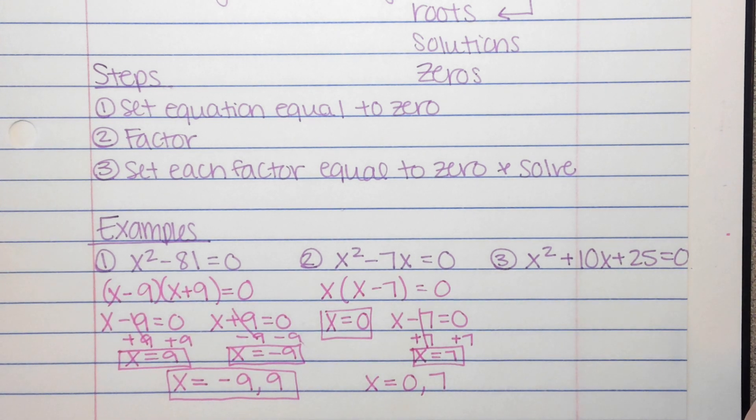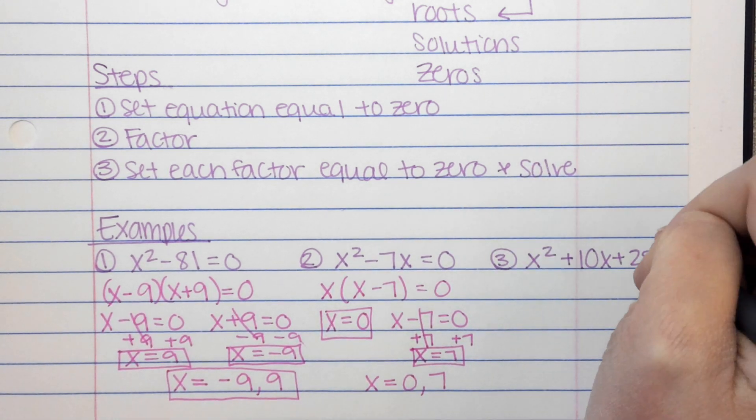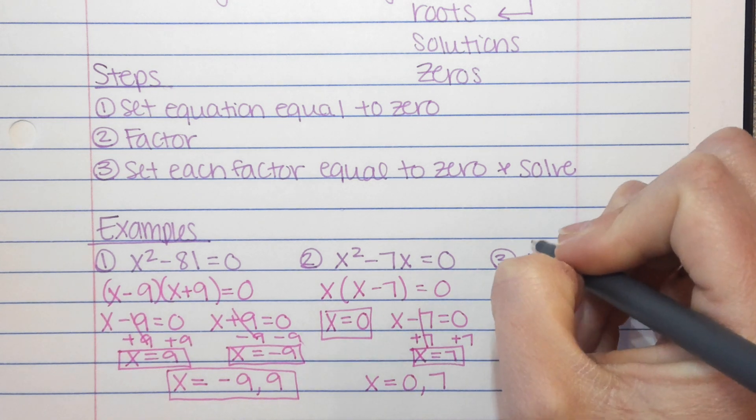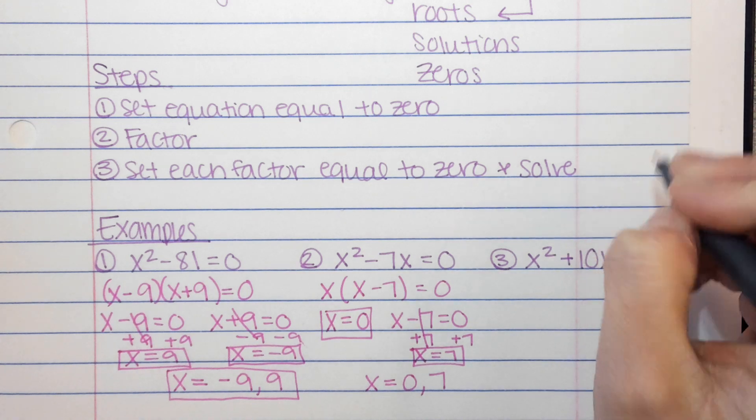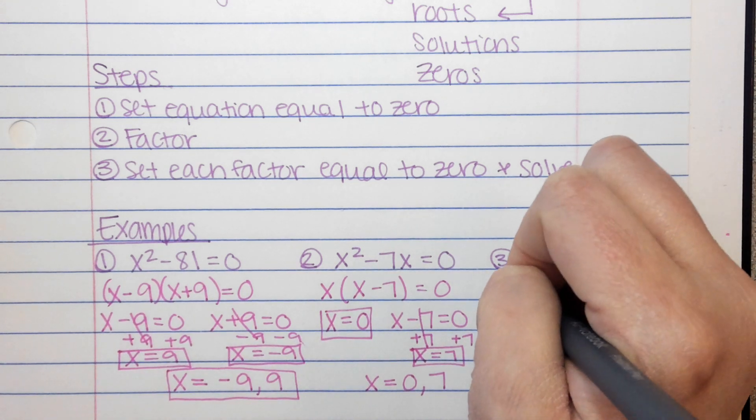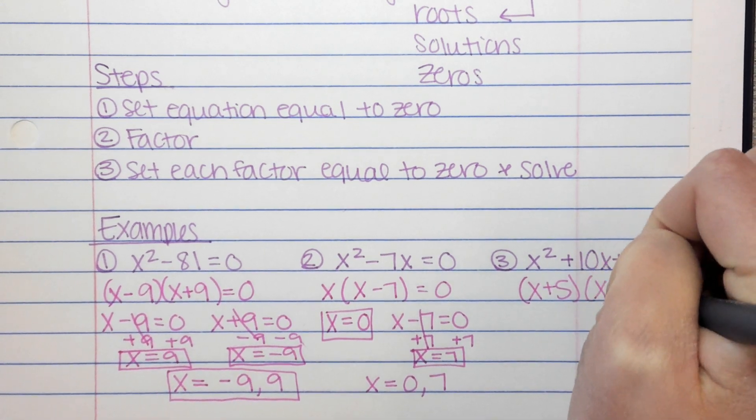x squared plus 10x plus 25. That is one of our special cases as well, because this is a perfect square. This is a perfect square. And 2 times a times 5 is 10. So x plus 5 and x plus 5 equals 0.